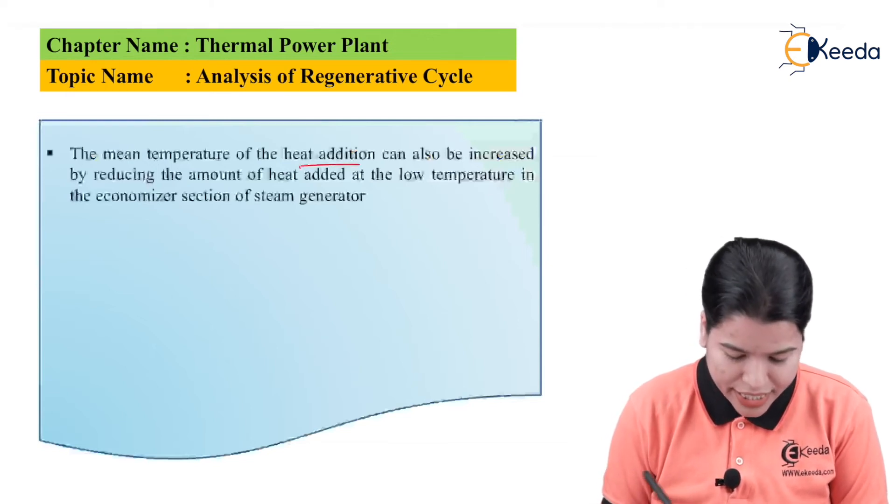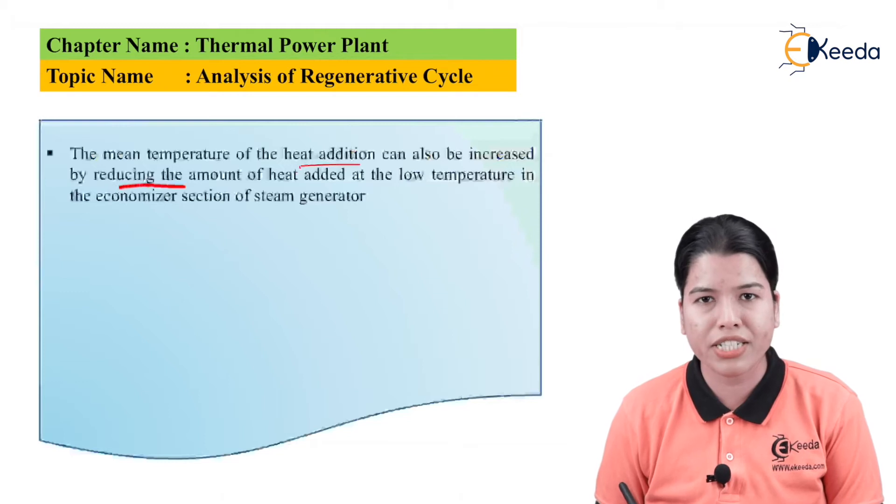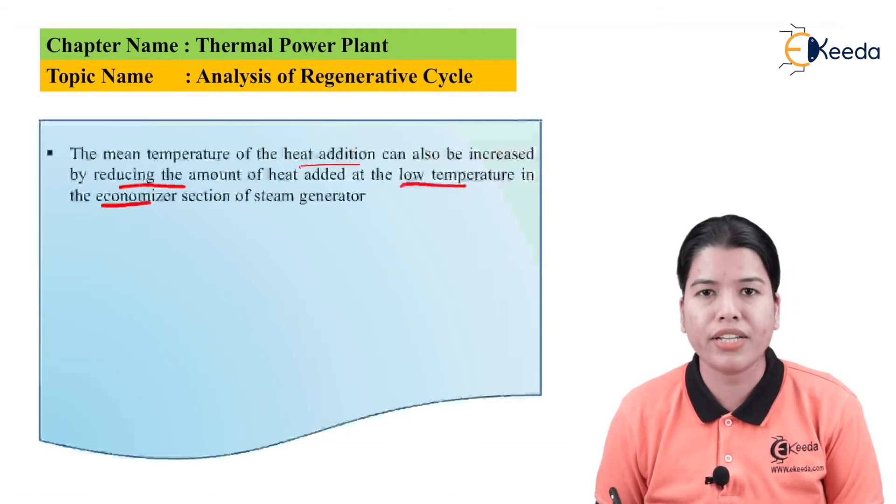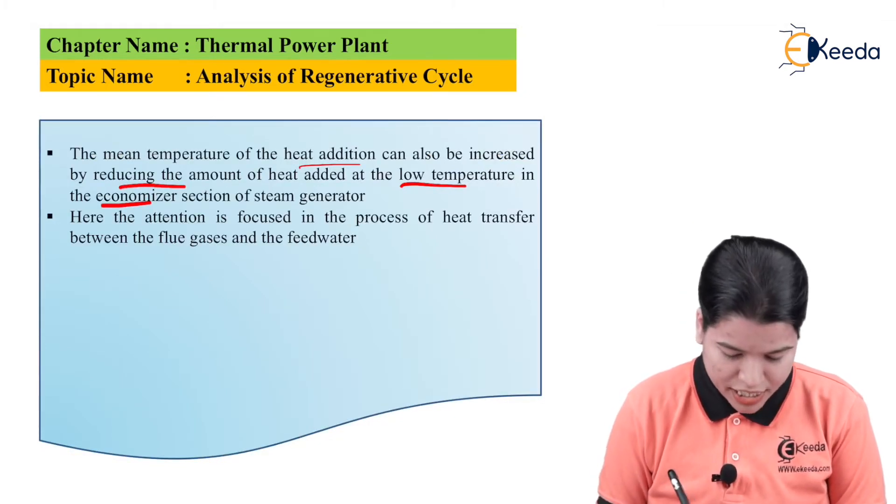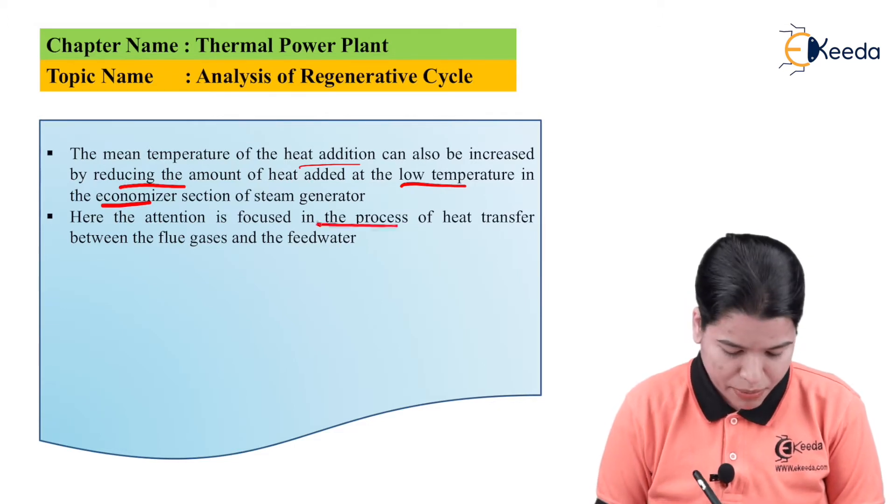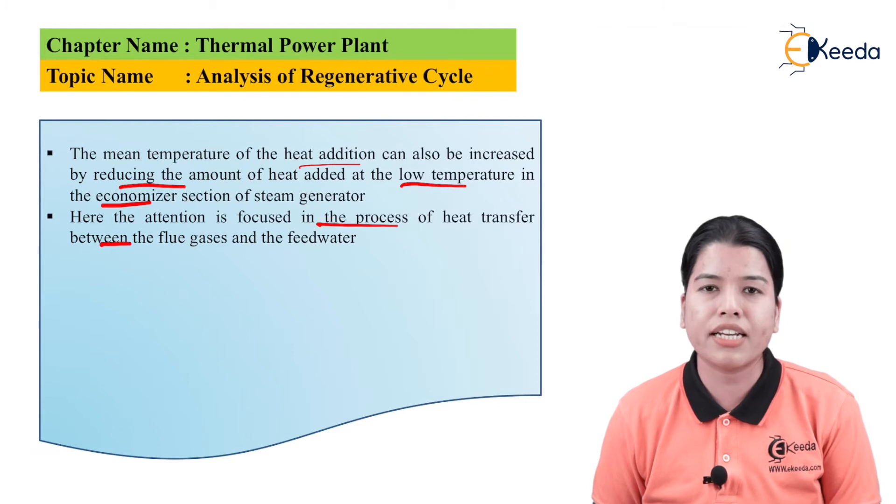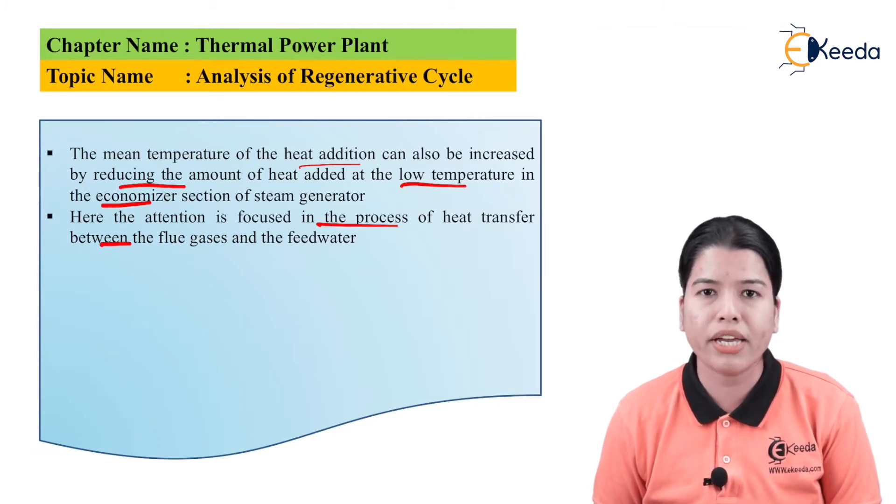Now, the mean temperature of the heat addition can also be increased by reducing the amount of heat added at low temperature in the economizer section of the steam generator. Here, attention is focused on the process of heat transfer between the flue gases and the feed water. The flue gases which are released are also at high temperature, so this temperature can also be utilized.